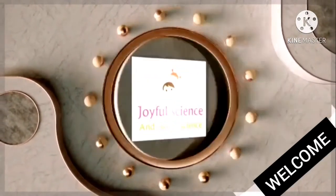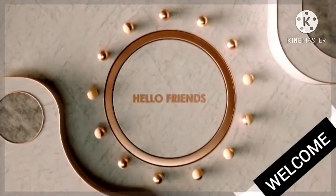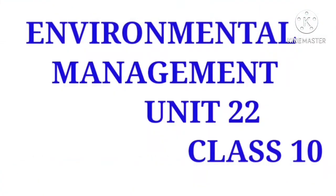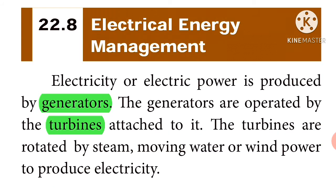Hello friends. In Class 10, Unit 22 - Environmental Management lesson, we will look at electrical energy management. Electricity or electric power is produced by generators. Min-saram uruppatthi sayya generators are operated by the turbines attached to them.